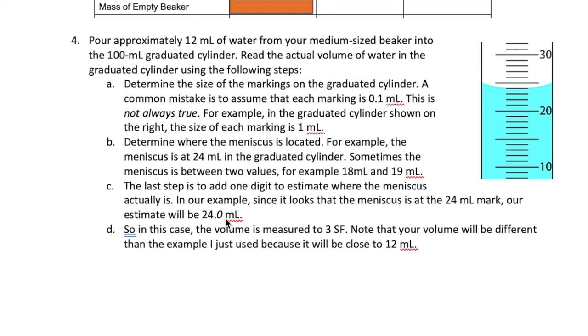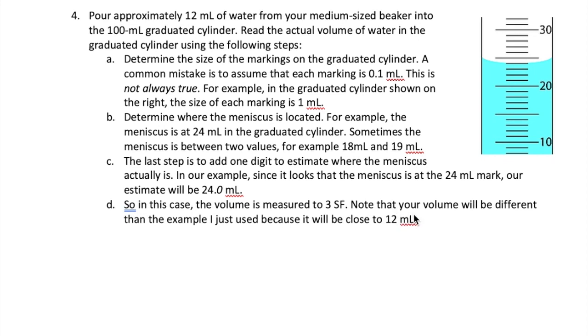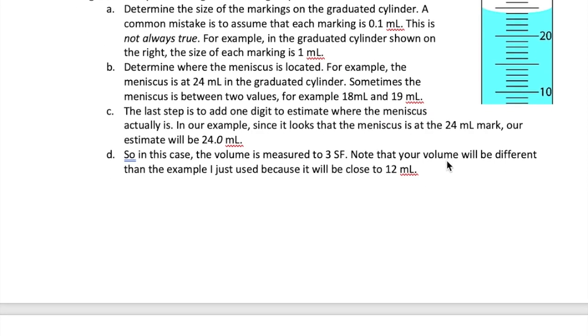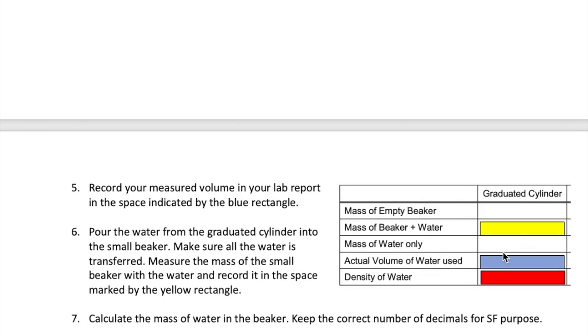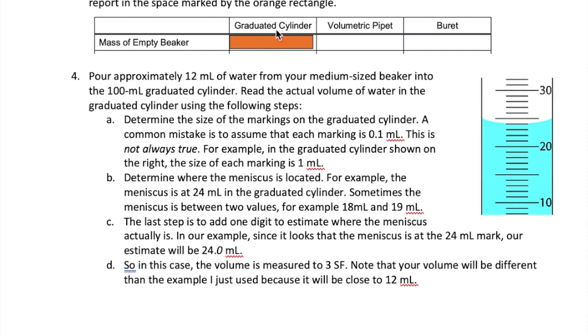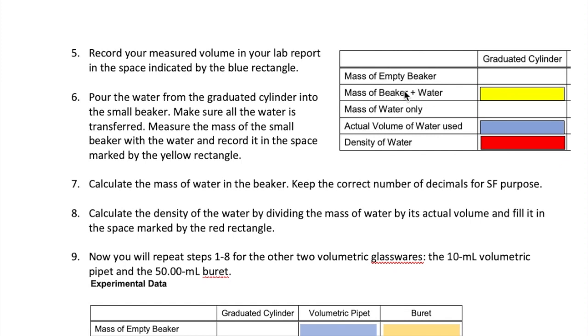So to wrap up, the final volume I would write down is 24.0 milliliter for the example in this graduated cylinder, which is a 3 significant figure number for my volume. Now in your actual experiment, your volume will be somewhere closer to 12 milliliter, because that's approximately how much you pour into the graduated cylinder from the beaker. So you're going to read the exact value of that volume. Once you read the actual volume of the water in the cylinder, write that in the space marked by the blue rectangle here, which is labeled actual volume of water use. Once you have that written down, you want to pour the water from the graduated cylinder into that small beaker that you measure the mass of earlier. Now, you're going to measure the mass of the beaker with the water in it and record it in the space marked by this yellow rectangle.